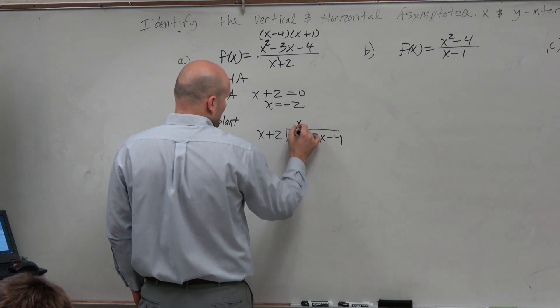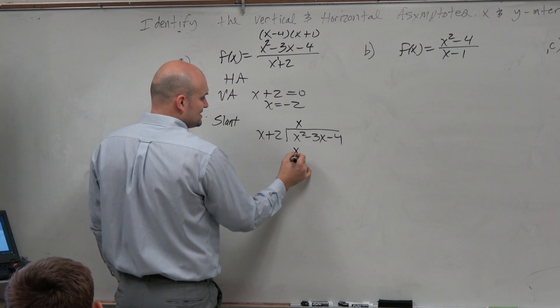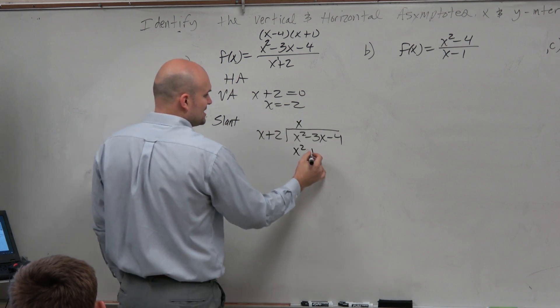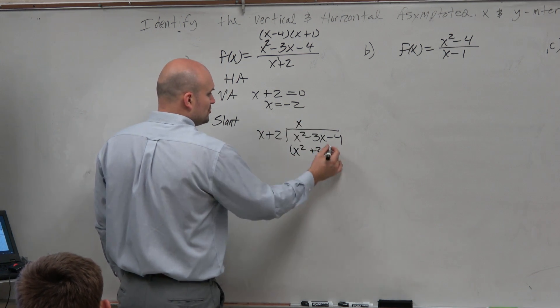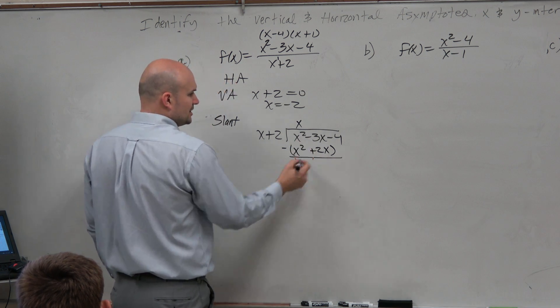x goes into x squared, x times. x times x is x squared, x times 2 is a positive 2x. Group and subtract.